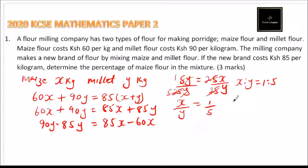So if you want to know the percentage, we are required to find the percentage of maize in the mixture. You find that it is 1 over 6, that is the fraction of the maize in the mixture. You multiply it by 100.